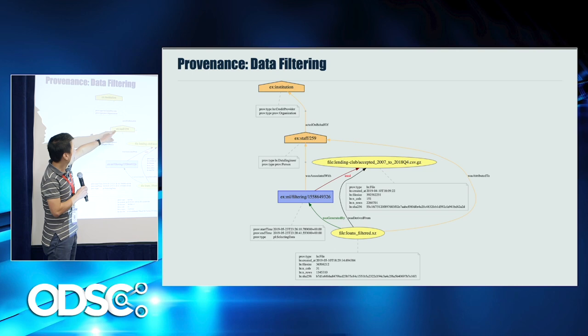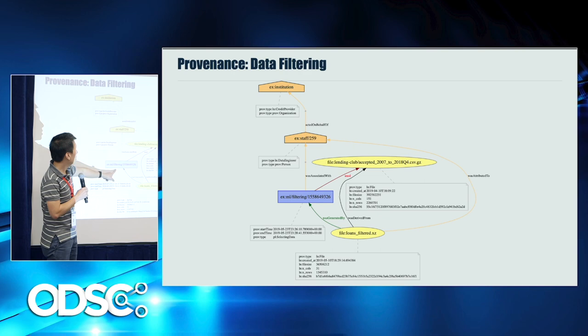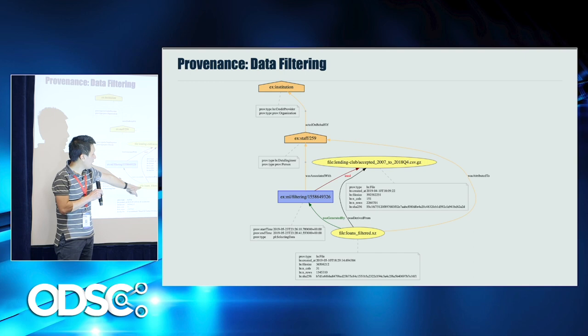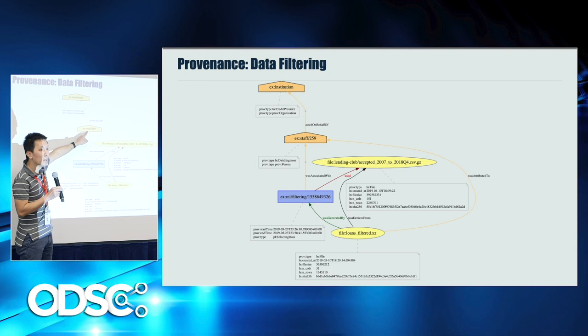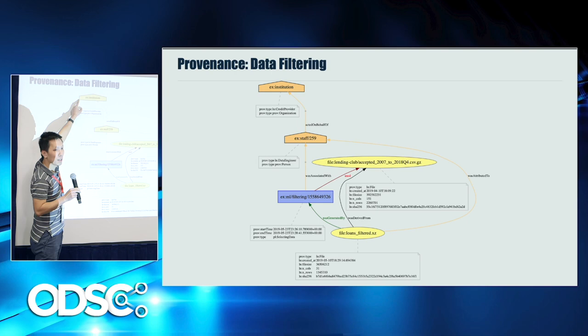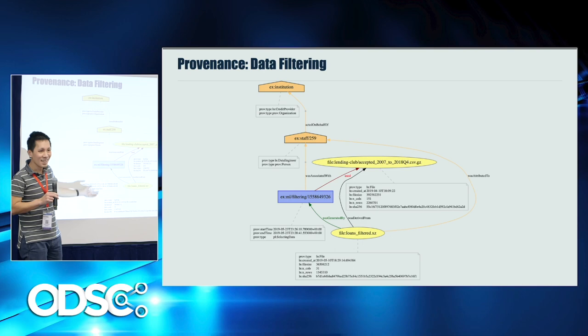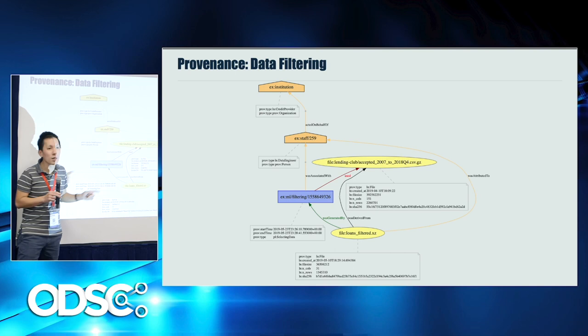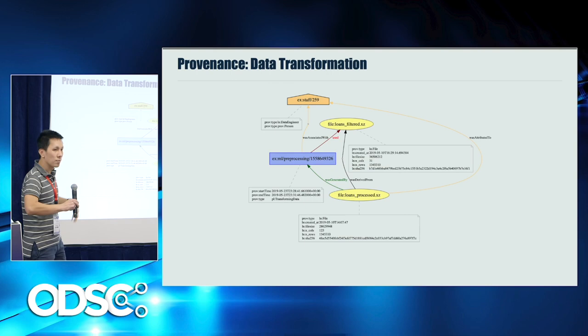There are two agents in this whole process: a staff member with a staff ID, who is a person and a data engineer — we can tell what kind of agent that is. This staff is responsible for the filtering activity. A new entity is generated from this activity, and we attribute its creation to that staff. However, that staff did all these things on behalf of the company he worked for — his employer. So you describe the acted-on-behalf-of link to the employer, and later you can use a graph query to ask who is responsible for the loans_filter entity and traverse all those links back.